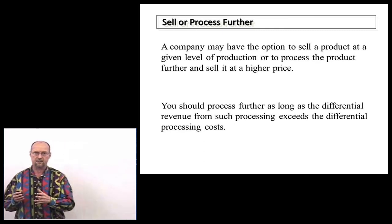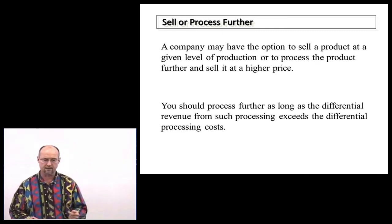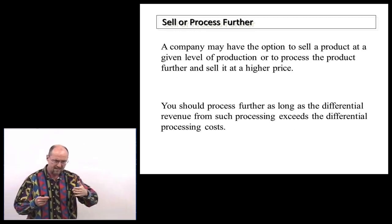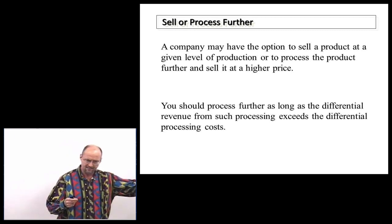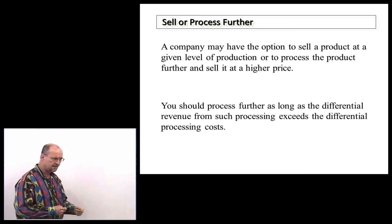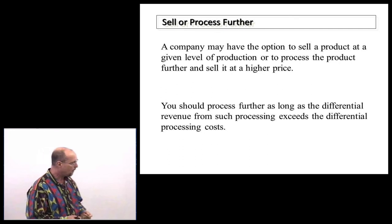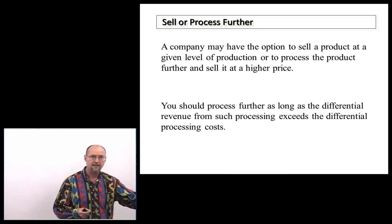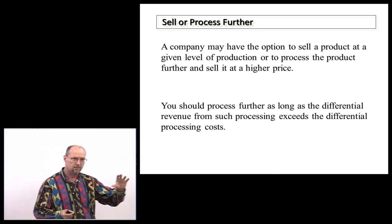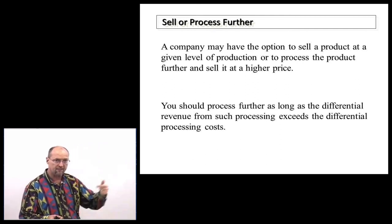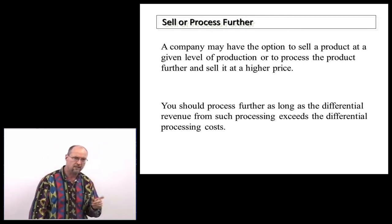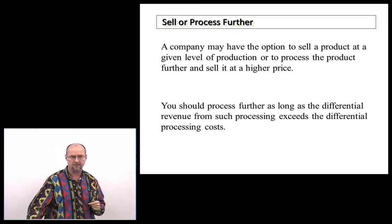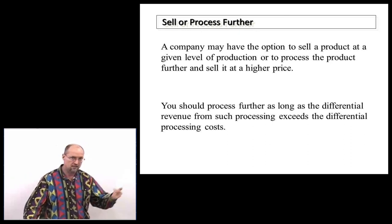Consider the sell-now versus process-further decision using gasoline as an example. Crude oil turns into multiple products — asphalt, tar, kerosene, Vaseline, and ultimately gasoline. The question is: at what point should we sell? Should we sell it in its current state, or continue refining and sell a more finished product? The core issue is: what will it cost to process further, and how much additional revenue would we get? It comes down to a simple question — will the additional revenues exceed the additional costs? This is really the analysis in all these scenarios: identify relevant revenues and relevant costs, and if revenues exceed costs, take that path.